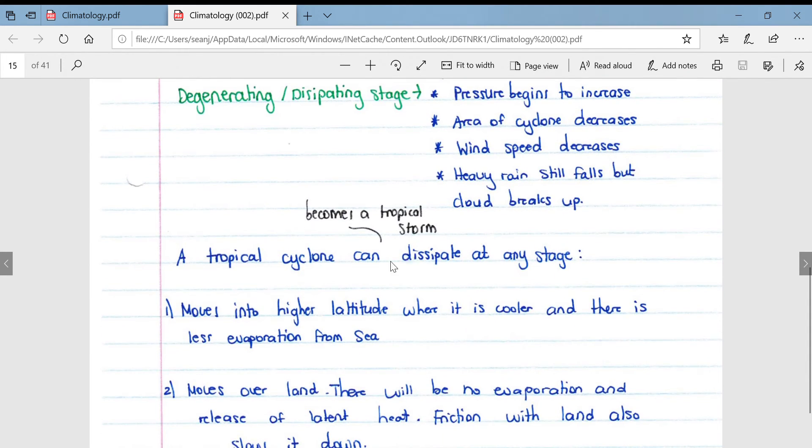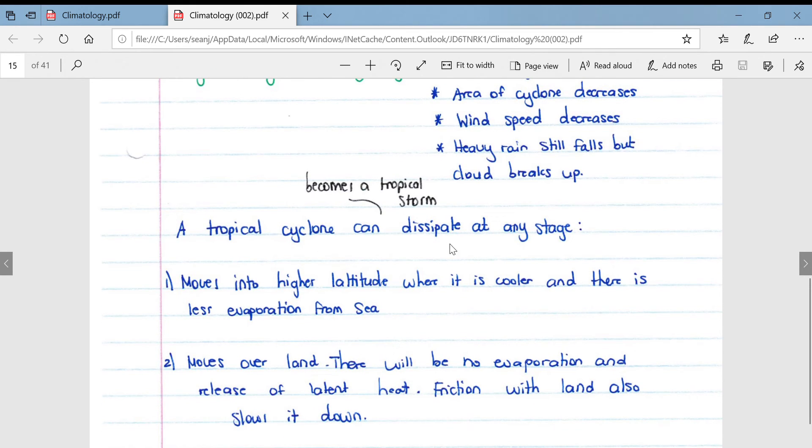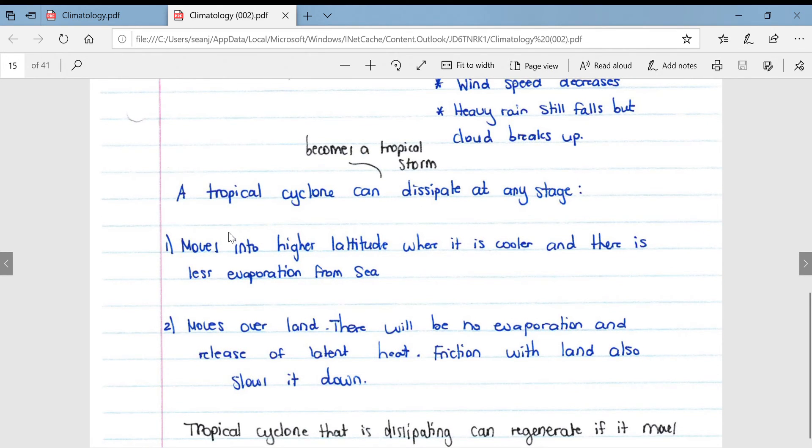A tropical cyclone can dissipate at any stage and then it becomes a tropical storm. It moves because of a couple reasons: it either moves into a higher altitude where it is cooler and there's less evaporation from the sea, or it moves over land where there'll be no evaporation and no release of latent heat. Friction with the land also slows it down and further exacerbates its dissipation.